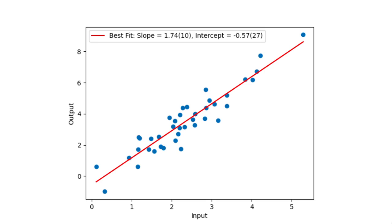Note how the numbers are presented. The first number is the best fit parameter and the number in brackets is its estimated uncertainty. In a later lecture we'll talk about actually calculating this, but for now note that you should almost always be presenting an uncertainty estimate whenever you show a number.